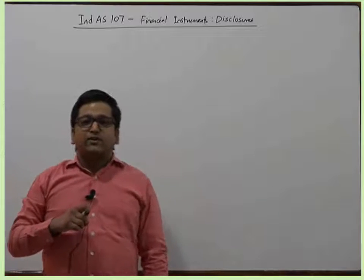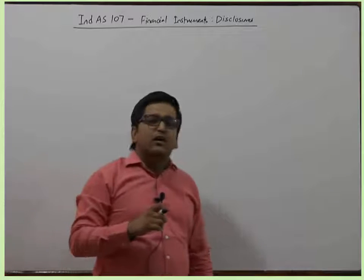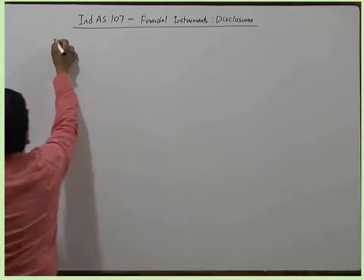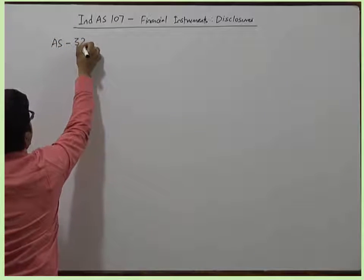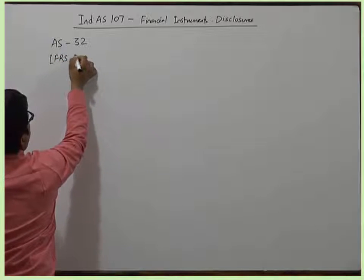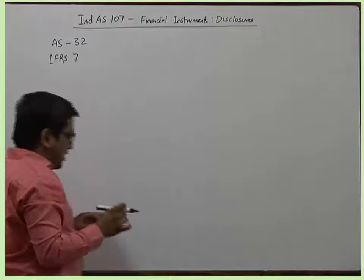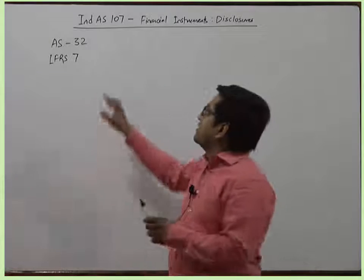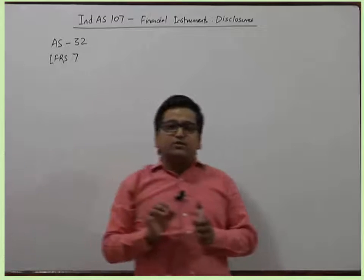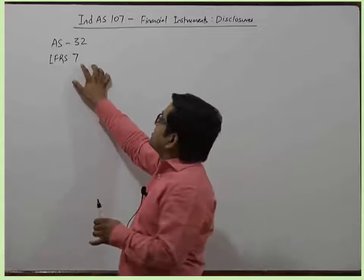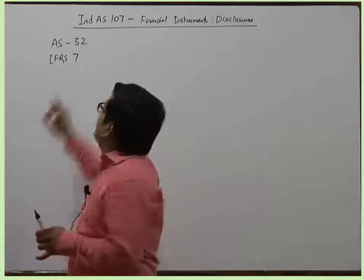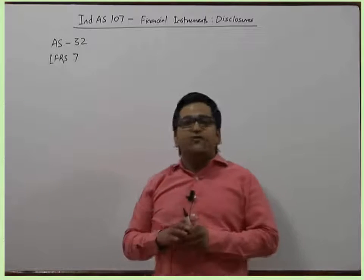Financial instruments के respect में notes to account में क्या-क्या disclosures देने होंगे — इसका corresponding accounting standard AS 32 है, और IFRS में इसका corresponding IFRS 7 है। You can determine the INDAS number by adding 100 to the IFRS number — so 7 plus 100 becomes 107, which is the number of INDAS.